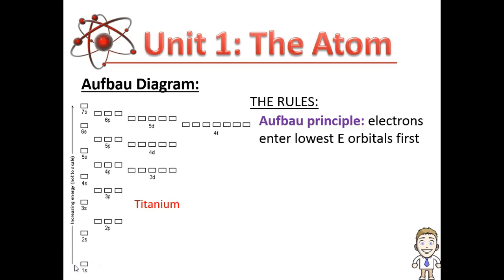There's also some rules that we're going to use to start assigning these electrons into the proper orbital. The first rule is known as the Aufbau principle and it tells us that electrons always enter the lowest energy orbital first. So on my list, that's clearly going to be the 1s down at the bottom.